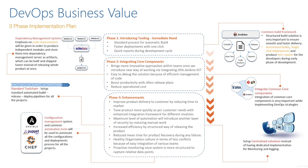Phase two is integrating the core components, bringing more innovative approaches within teams. Once we introduce a new way of working — integrating Atlassian tools like Jenkins with Jira, Jenkins with Git, and implementing webhooks that fire a build in Jenkins — it's easy to debug because of efficient code management. It also boosts productivity with weekly or bi-weekly release plans and reduces operational costs.